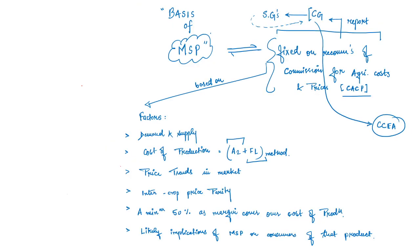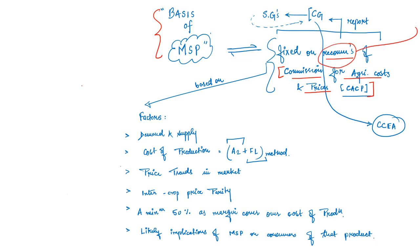MSP is fixed on the recommendations of the Commission for Agriculture Cost and Prices, or CACP. This is the most important commission to keep in mind. CACP compiles its recommendations and observations from ground-level work throughout the year into a report.